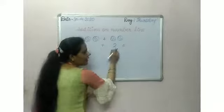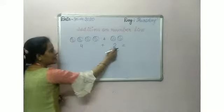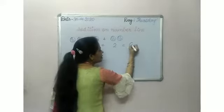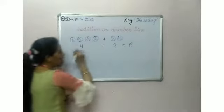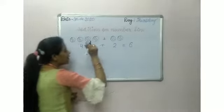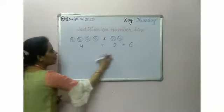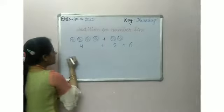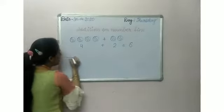How many bowls we have all together? Six bowls. We can do the same addition on a number line.